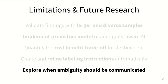Finally, there are lots of questions around when ambiguity matters. For example, should an AI communicate ambiguous cases selectively — only if they have the potential to impact meaningful outcomes? Should AIs adapt to user characteristics like ambiguity tolerance?